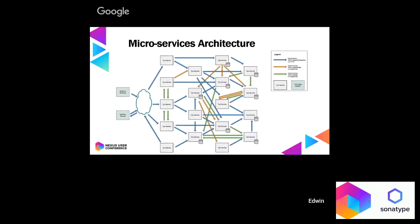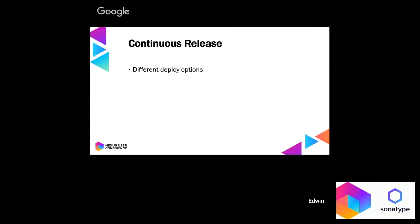Also at Tyro, we develop all applications using a microservices architecture. This is very important when we talk about the IQ Server lifecycle scans. Today at Tyro, we have over 200 microservices running in production. We also do continuous integration, where we favor pushing small incremental commits to the master repository. We initially did a fortnightly deploy of all our changes into production, but today we have a number of different deploy options.